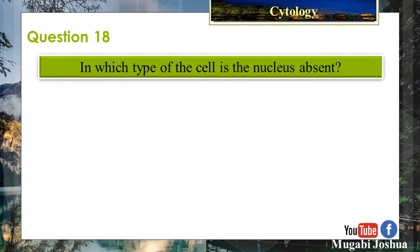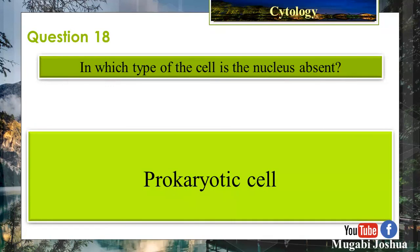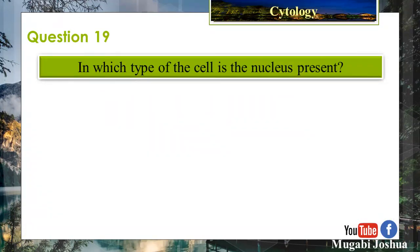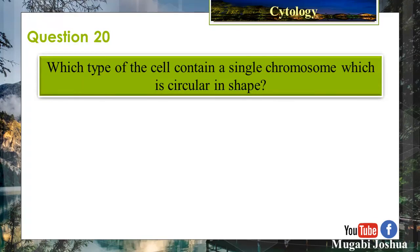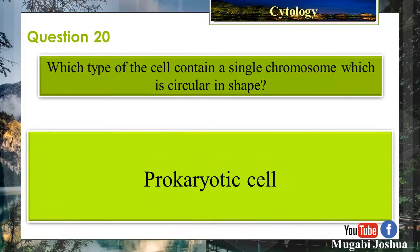Question 17: Which type of cell is generally large? Eukaryotic cell. Question 19: In which type of cell is the nucleus present and contains a single chromosome, which is circular in shape? Prokaryotic cell.